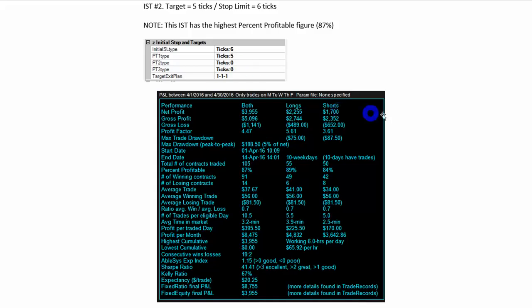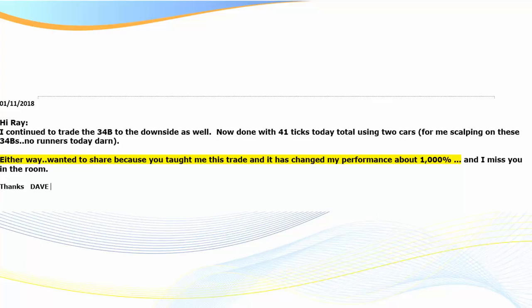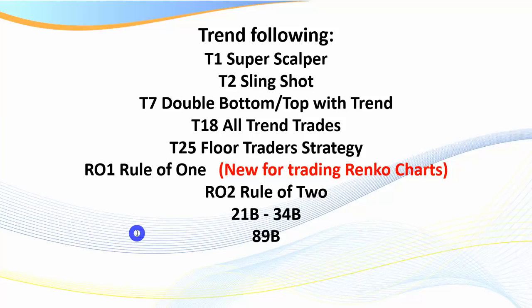You'll see research reports going back two or three years showing extremely profitable strategies with 80% win-loss ratios. One of our members, Dave from Seattle, sent me a message from January 11th 2018 saying he was down 41 ticks that day trading the 34B but it had changed his performance about a thousand percent. Dave virtually solely trades the 34B - it works, it's a brilliant core strategy. So that's what I've covered today: what I recommend in the introduction. We do now have the new introduction of the Rule of One for Renko. Thank you traders, I hope this was informative and helpful.